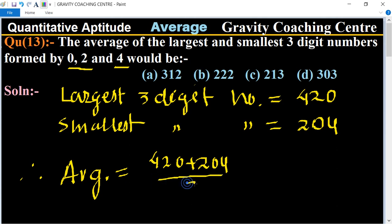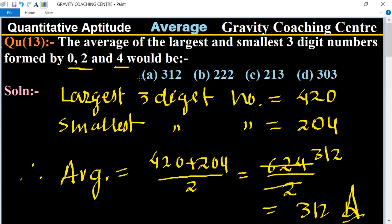This gives us 624 divided by 2, which equals 312. Three hundred twelve is the required average answer, so option A is the correct answer.